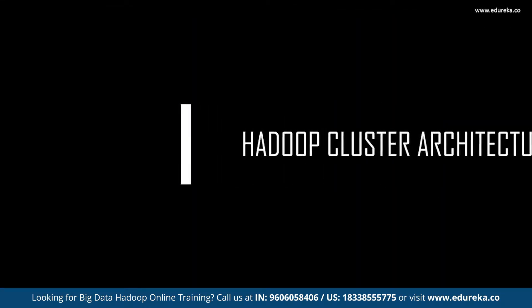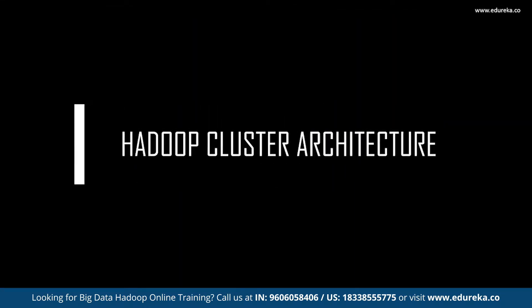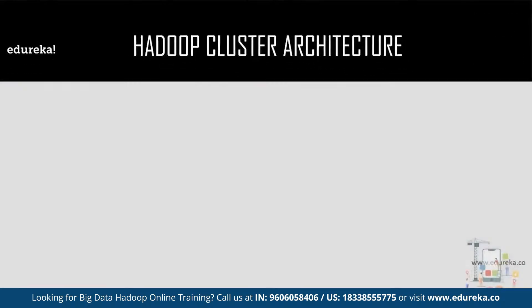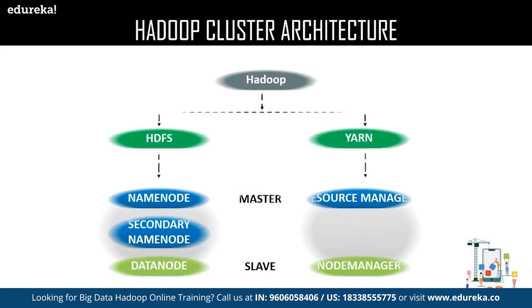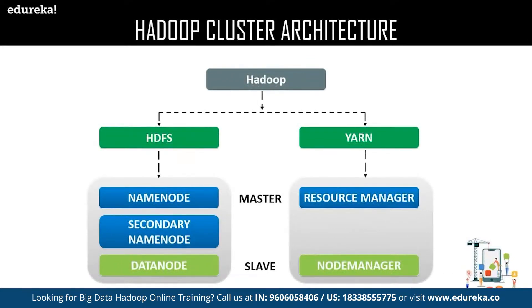Now that we have gone through a few facts on Facebook's Hadoop cluster, let us move on to the Hadoop architecture. The architecture of Hadoop consists of the following components: HDFS and YARN. Let us begin with HDFS. HDFS consists of the following components: the NameNode, Secondary NameNode, and DataNode.